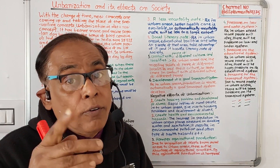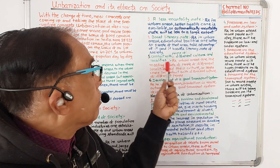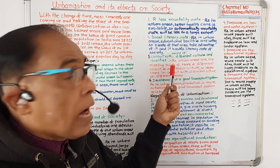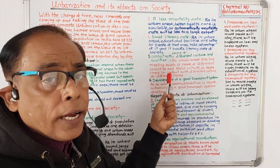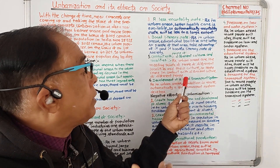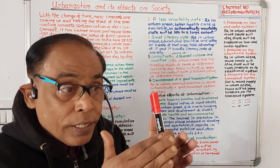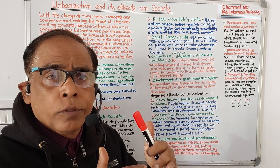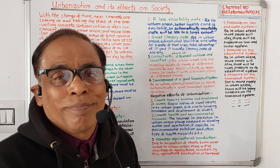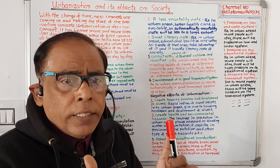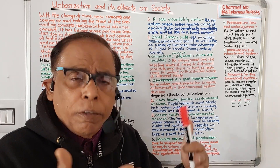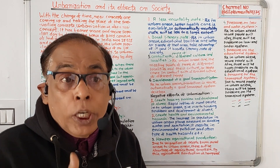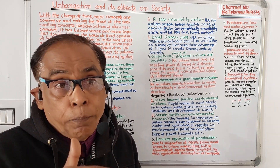Number five: contact with people of different cultures and localities. Urban areas are the meeting points of people of different localities and their cultures, so people come in contact with different cultures. This promotes their cultural development and broadens their knowledge.